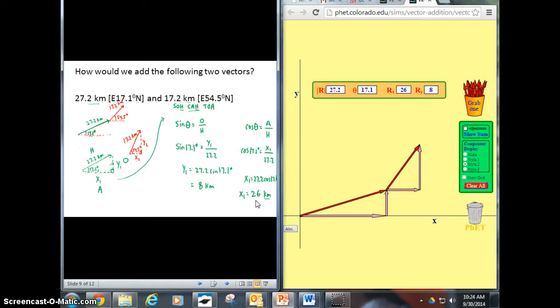So I just found what the two side lengths were for this green triangle. If we look at the green triangle, that was initially this one. We have 27.2 as our hypotenuse. Our y value is going to be 8, and our x value is 26. So that's what we found.